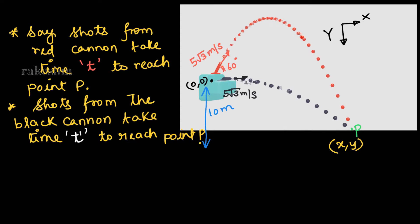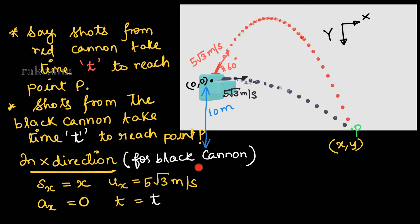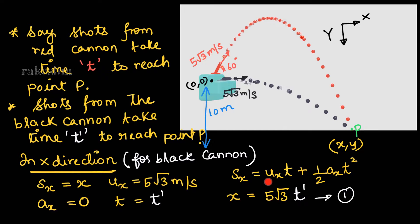First, let us write the equation in the horizontal direction for the black cannon. The displacement in the x direction is x, initial coordinates are (0, 0) and final is (x, y). In the horizontal direction there is no acceleration, so acceleration a_x = 0. The initial velocity in the x direction is 5 root 3 meters per second, and the time taken to reach point P is t'. Writing the equation: x = u_x · t' + ½ · a_x · t'² gives x = 5√3 · t'.